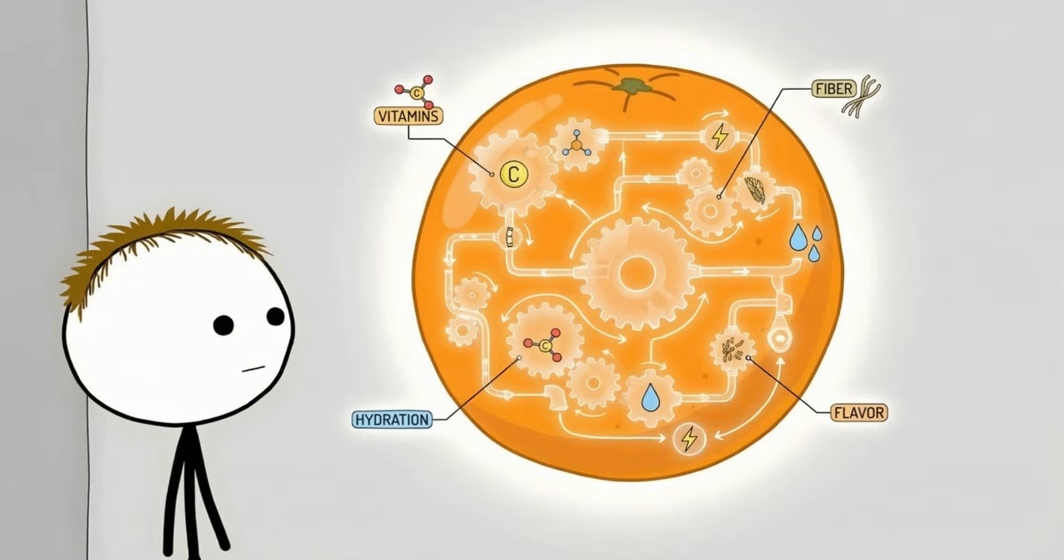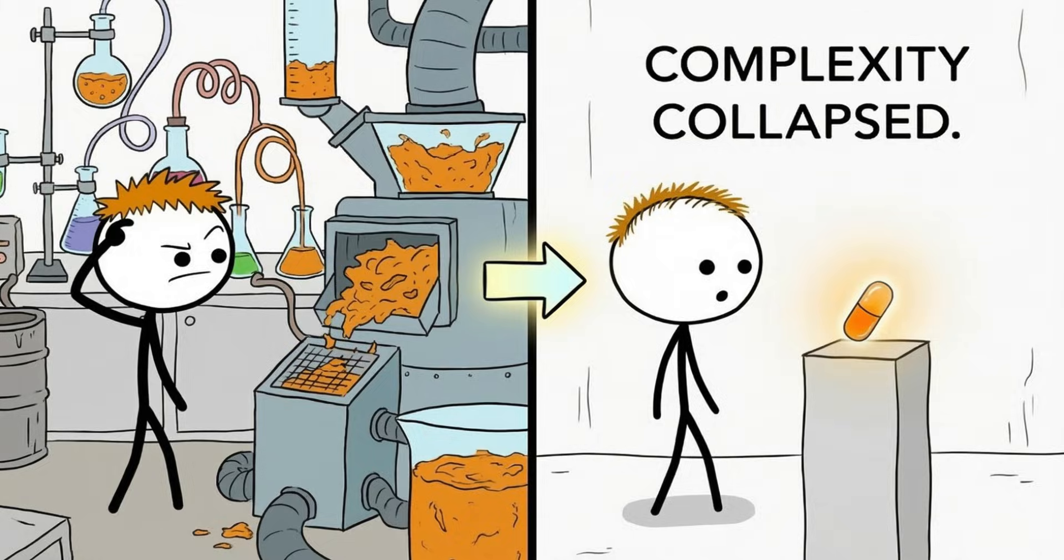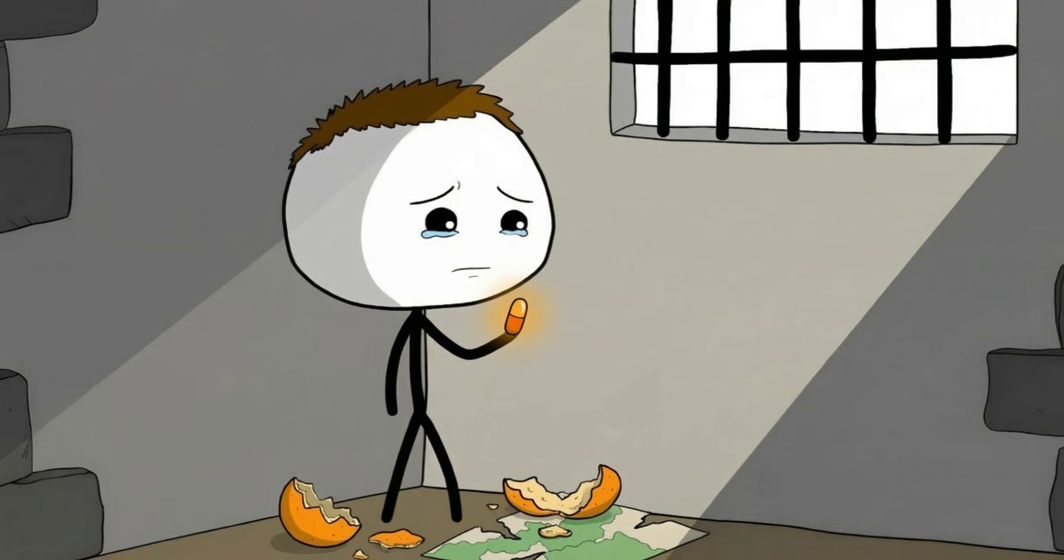Here's the misunderstood part. The benefits of whole foods come from systems, not ingredients. An orange isn't powerful because of vitamin C alone. It's powerful because of fiber, flavonoids, water content, and slow digestion working together. Strip out one component, dry it, concentrate it, and put it in a capsule, and you've lost the context that made it special.